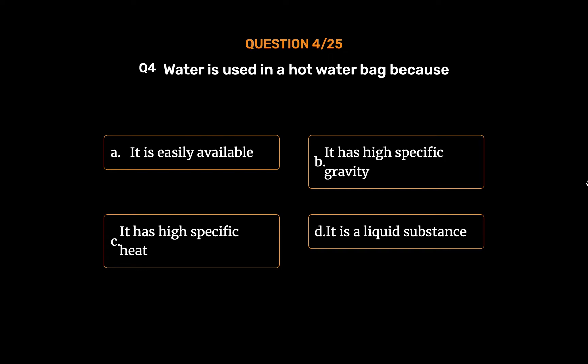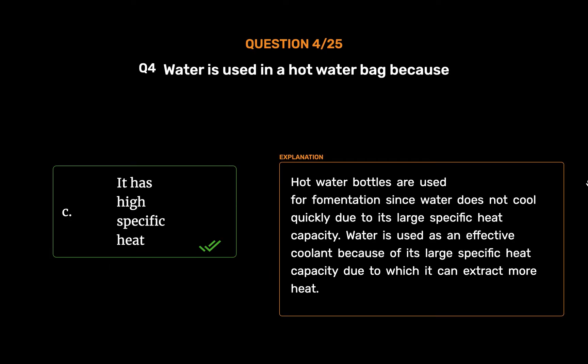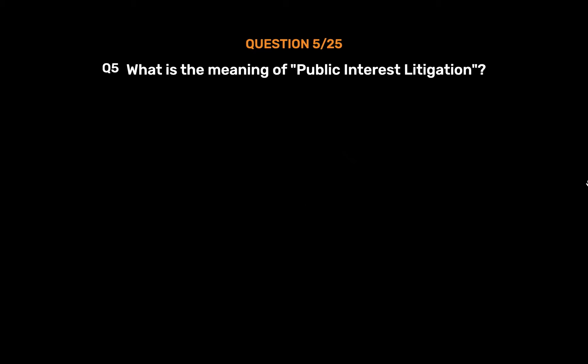The correct answer is Option C: It has high specific heat. Hot water bottles are used for fermentation since water does not cool quickly due to its large specific heat capacity. Water is used as an effective coolant because of its large specific heat capacity, due to which it can extract more heat.